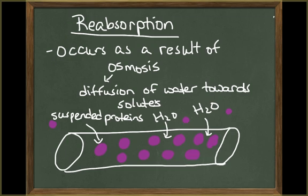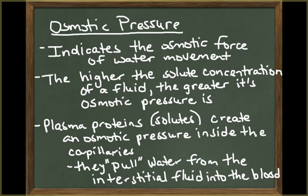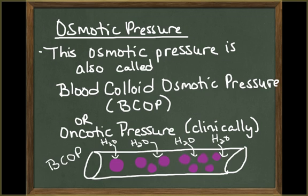There is a higher solute concentration inside the capillaries due to the plasma proteins that are more abundant in the blood than in the interstitial fluid. The osmotic pressure of a solution is an indication of the force of osmotic water movement. The higher the solute concentration of a solution, the greater the solution's osmotic pressure. Therefore, the more suspended proteins there are in the plasma that can't cross the blood vessel walls, the greater the plasma's osmotic pressure. The plasma proteins act as solutes that will pull water from the interstitial fluids into the blood vessels. The osmotic pressure caused by the plasma proteins is often called blood colloid osmotic pressure, or BCOP.